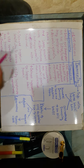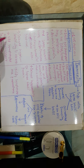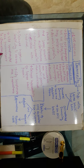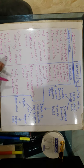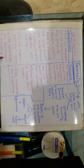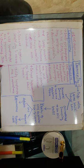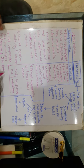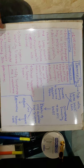In tubercular leprosy, CD4 lymphocytes are predominant. In lepromatous leprosy, CD8 lymphocytes are predominant both in circulation and also in skin granulomas.